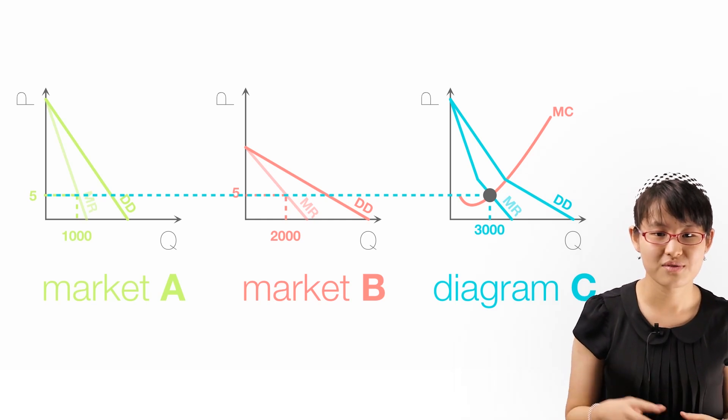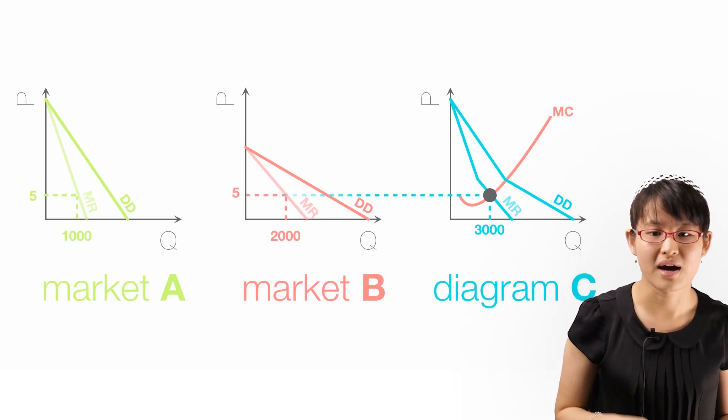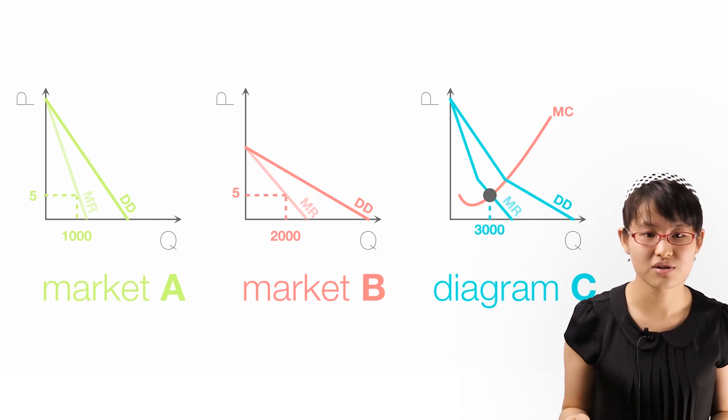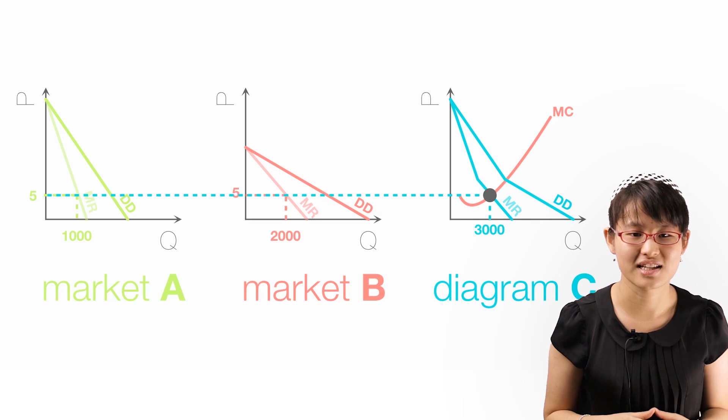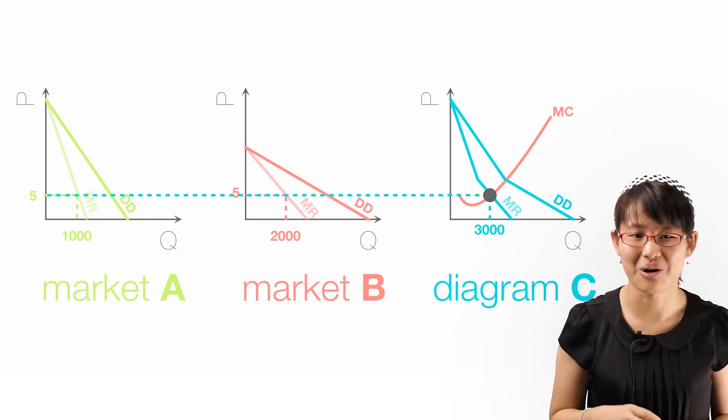So, with an output of 1,000 units in market A, 2,000 in market B, making 3,000 in total, revenue would increase by $5 exactly if one extra unit was sold, whether in market A or B.